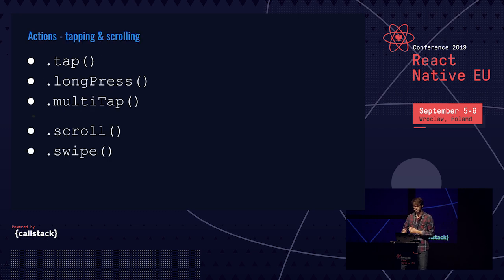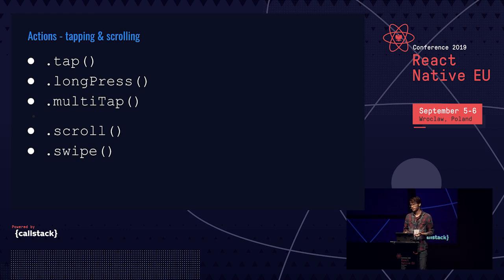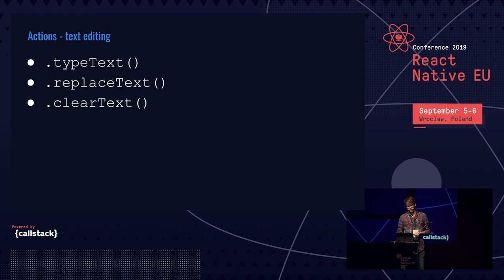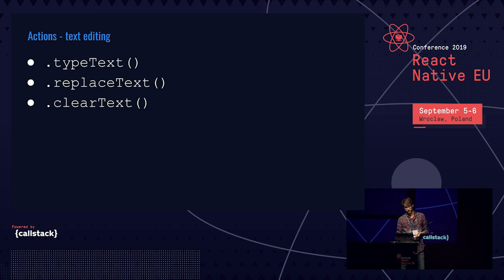There are also actions. For buttons you can tap, long press, or multi-tap. You can also scroll and swipe left, right, up and down. Detox gives you the ability to control the app from the user perspective. There are also actions for typing text: you can type, replace, and clear text.